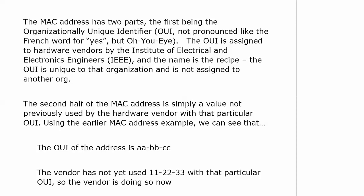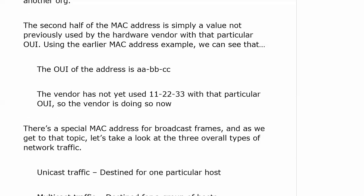Now let's talk about the two parts of the MAC address. The first part is the Organizationally Unique Identifier, or OUI. The OUI is assigned to hardware vendors by the IEEE — the Institute of Electrical and Electronics Engineers. The OUI is unique to that organization and is not assigned to another. The second half of the MAC address is simply a value not previously used by the hardware vendor with that particular OUI. For example, in the MAC address AABBCC112233, the OUI is AABBCC and the vendor-assigned portion is 112233.